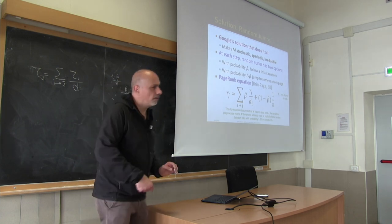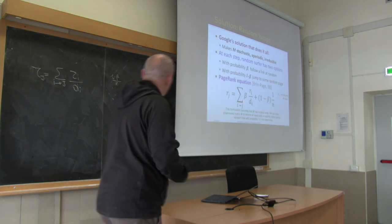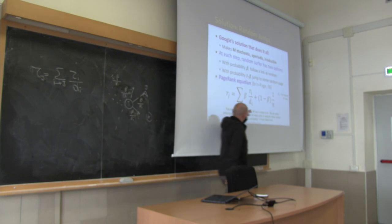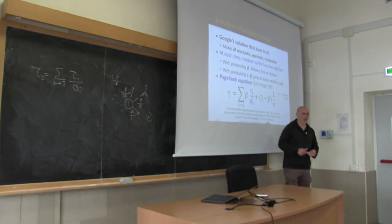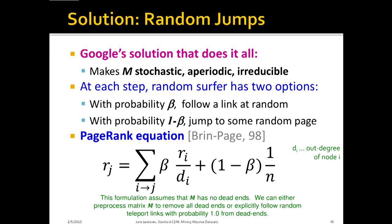And then you get the PageRank equation. If I ask you on an exam: give me the PageRank algorithm — if you know this equation, you know the algorithm. You just read the probabilities: toss a coin; if heads, follow the links as before; else jump uniformly at random.